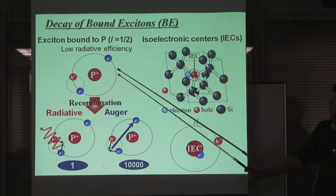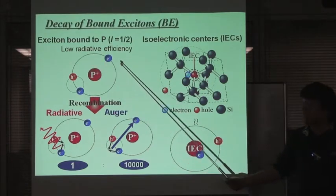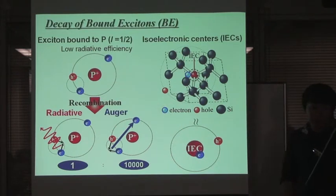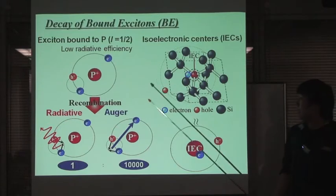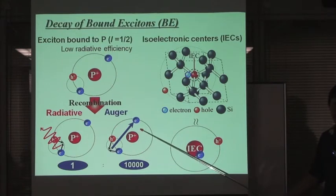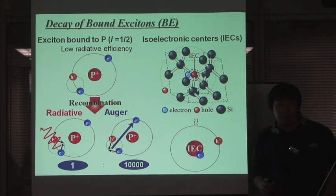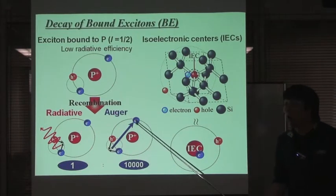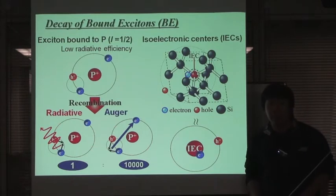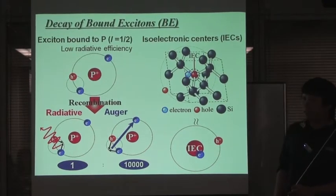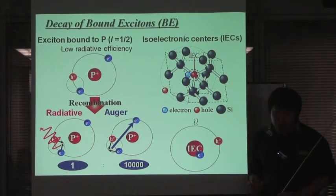However, the exciton bound to phosphorus has low radiative efficiency because the non-radiative decay, especially the Auger process, is dominant in the recombination. The Auger process is a process where the energy is applied to exciting an excess carrier, not as a photon or luminescence. The ratio between the radiative process and Auger process is about 1 to 10,000. In other words, we miss about 10,000 photons for detecting photons from the phosphorus nuclear spin qubit. The dominant Auger process makes the optical readout difficult.